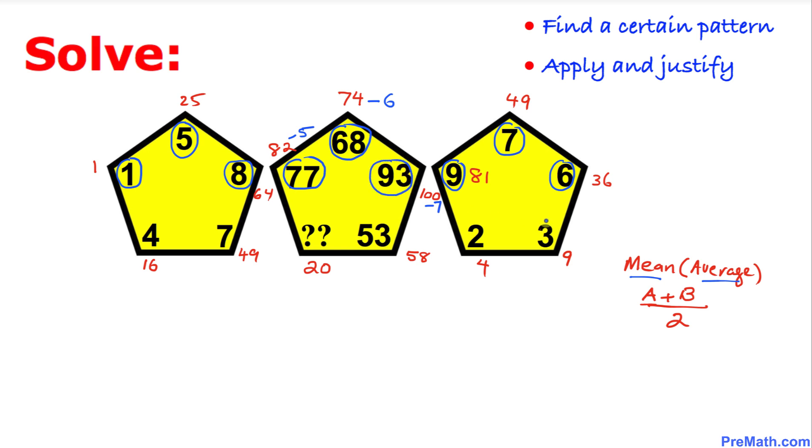And likewise when we do this one, 3 and 7, the mean of these two numbers is going to be 5. So we are going to subtract 5 from 58, we are going to get 53. We are going to apply the exactly same pattern on this our unknown number.